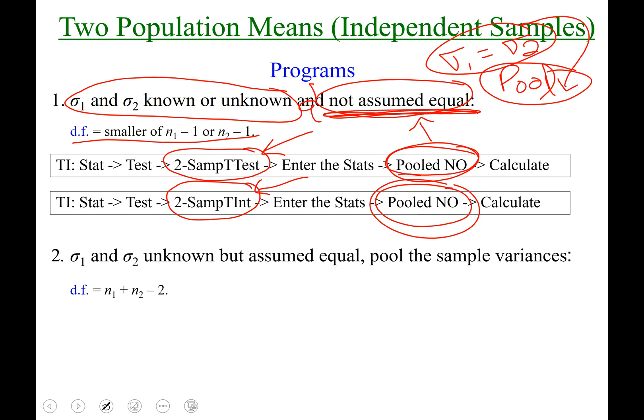Second option: σ₁ and σ₂ are unknown, but this time they are assumed to be equal. So we're gonna pool the sample variance. We're throwing both σ₁ and σ₂ into the same pool and we're allowed to do that because we're assuming that σ₁ and σ₂ are equal. The degrees of freedom in that case would be your first population sample size plus your second population sample size minus two.